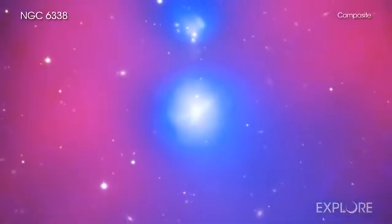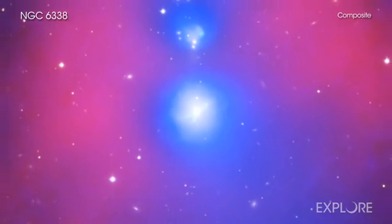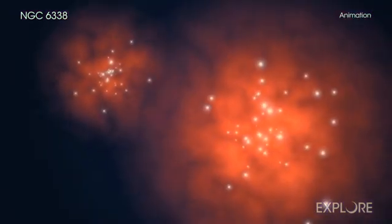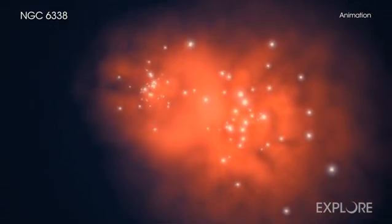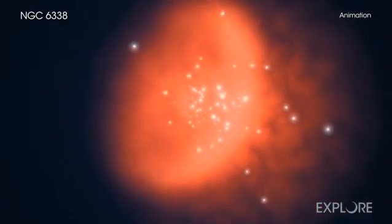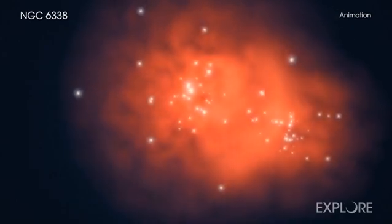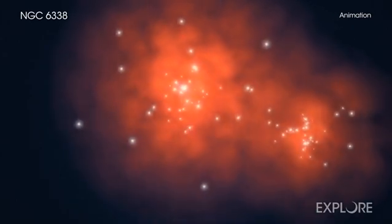Using NASA's Chandra X-ray Observatory and other telescopes, a team of astronomers has studied two galaxy groups that are smashing into each other at a remarkable speed of about 4 million miles per hour. This could be the most violent collision yet seen between two galaxy groups.